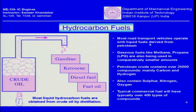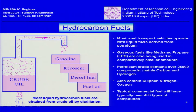Most road transport vehicles operate on liquid fuels derived from petroleum. Gaseous fuels like methane or propane — for example LPG — are also being used in comparatively smaller amounts. Natural gas is increasingly used in automobiles; for example, the Delhi transport system has been converted to CNG, and CNG delivery outlets are appearing in cities, with many cars and buses converted to CNG or LPG.